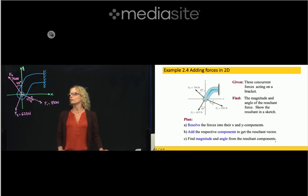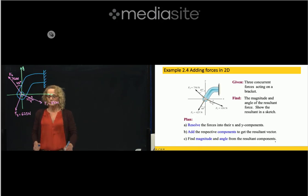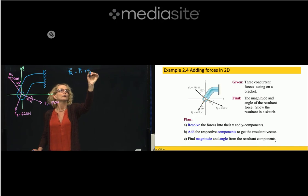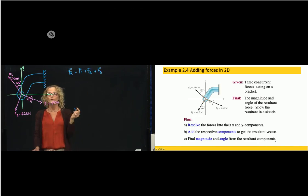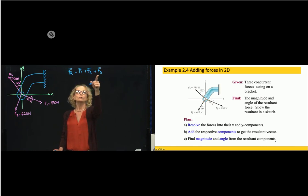This is problem 2.4. We have three forces and we want to find the resultant force. The resultant force as a vector is equal to each of these vectors adding them together. We will use the method of components for this problem, so we will find the components of each of the vectors, add them, and then find the result.